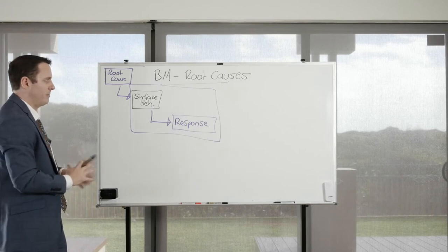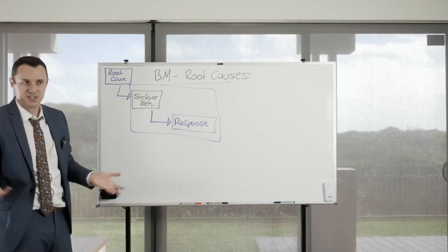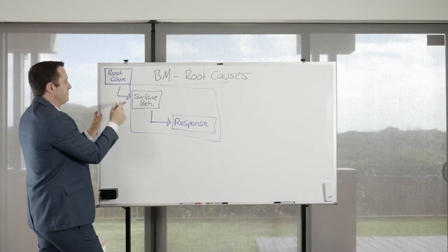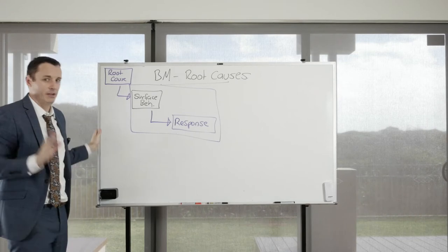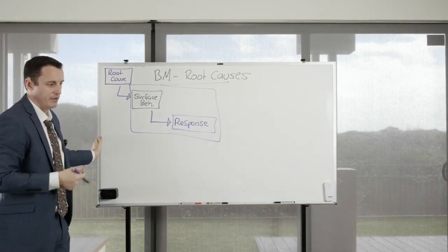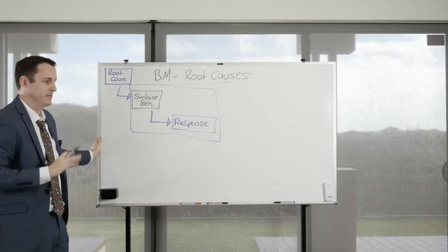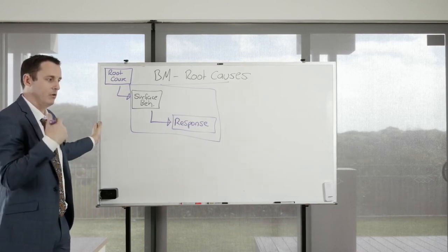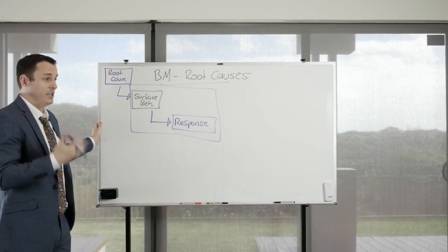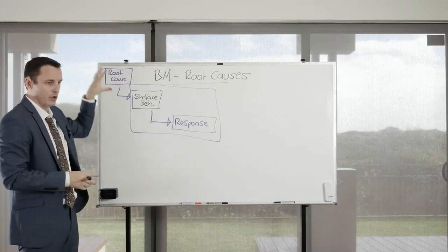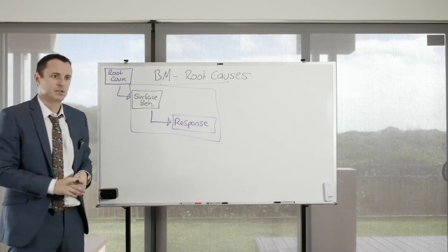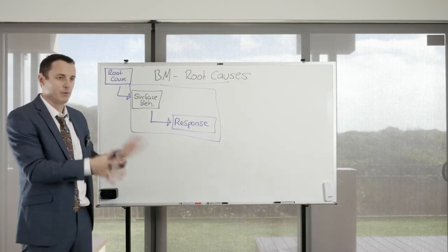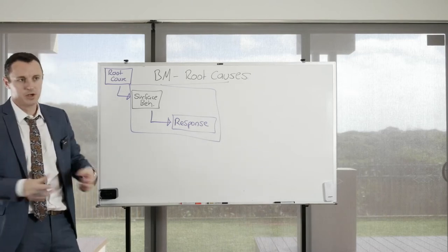Sometimes the root cause is irrelevant — for example, if a student throws a piece of paper, you just say, 'Don't do that, go pick it up.' It doesn't apply all the time. But if the behaviour is more serious, repetitive, or social in nature, you should always consider the root cause. Sometimes you just do a low-key correction and move on.